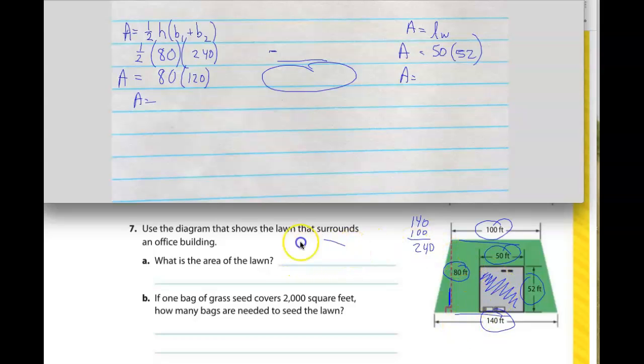Now, once you have that, you're going to put that information right here. And then the second part of this is, if one bag of grass seed covers 2,000 square feet, how many bags are needed to seed the lawn? So presumably, this is going to be a pretty big amount here. So we're going to take whatever that is, and we're going to divide it by 2,000, and then it'll tell us how many bags there are going to be. So you're going to finish that bit on your own.